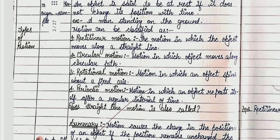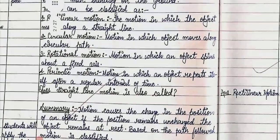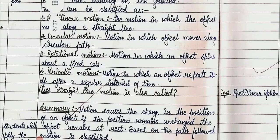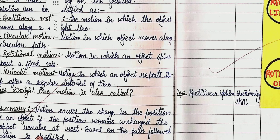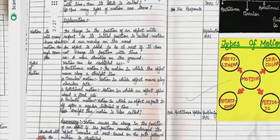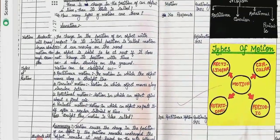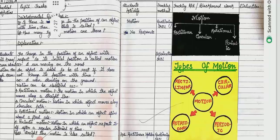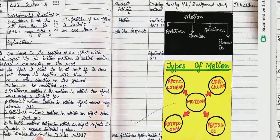After our explanation, we put a question to students: straight line motion is also called — answer: rectilinear motion. Questioning skill is used. Due to our explanation, students listen carefully.